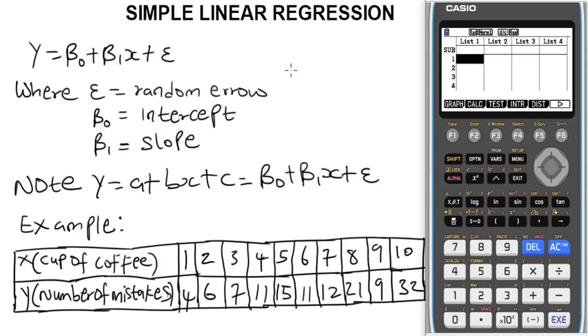Let's look at the problem and explain some things written down here. The general formula for simple linear regression is given by Y = β₀ + β₁x + ε, where ε is the random error, β₀ is the intercept, and β₁ is the slope. Note that this expression Y = a + bx + c is the same thing as this first formula β₀ + β₁x + ε.